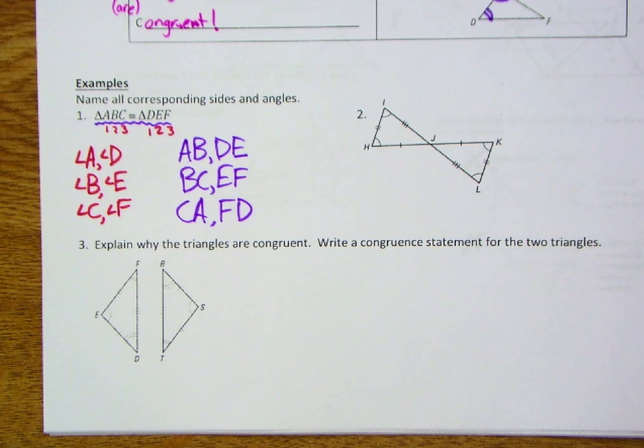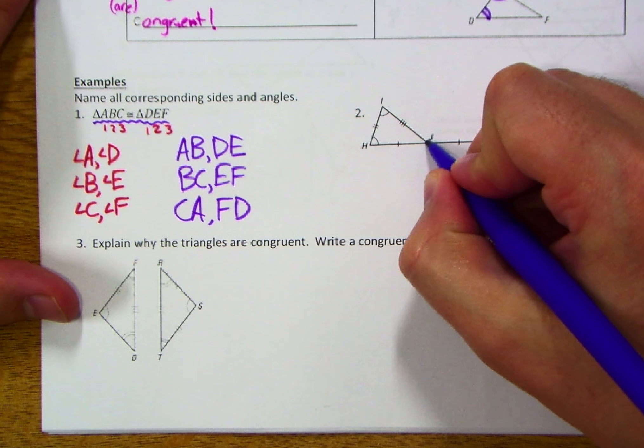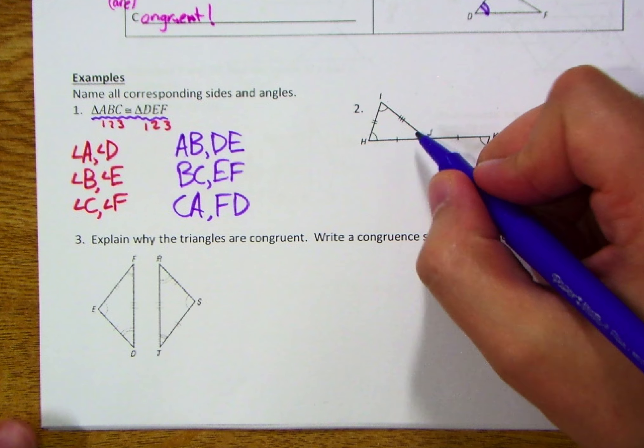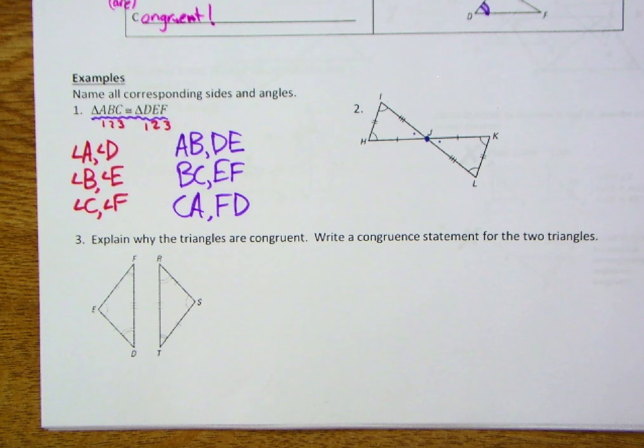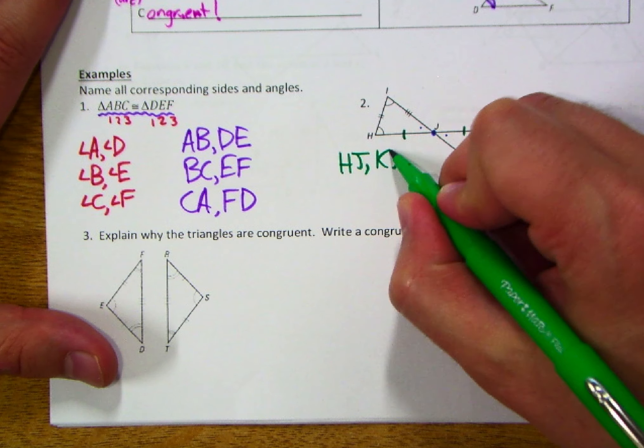Number two: we've got triangle IJH and triangle LJK. This is a little bit tricky because they actually share a vertex, even though the angles are clearly not the same. Let's break this down by corresponding parts. In the left triangle, we've got HJ with a single notch. In the right triangle we've got JK — really KJ, to match them the same way. Those angles would be vertical, so they match up. So HJ and KJ are corresponding sides.